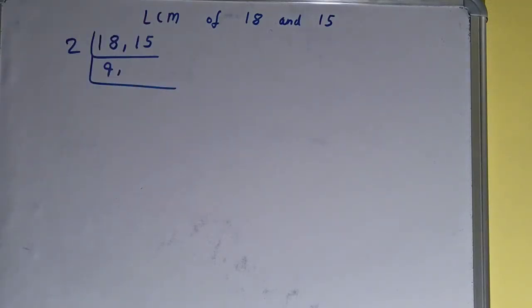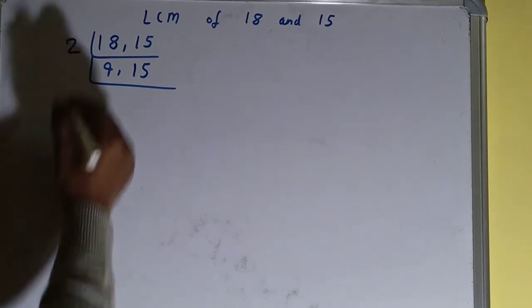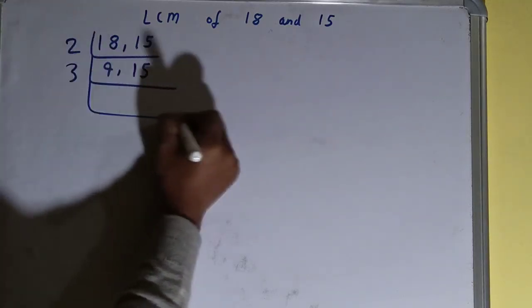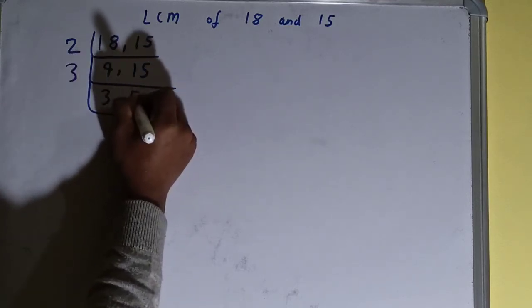Now we will not touch it. Again we'll check: is any of the numbers divisible by 2? None of the numbers, so we'll go to the next prime number, that is 3. And with 3, both the numbers are divisible, so we'll divide and we'll be having 3 comma 5.